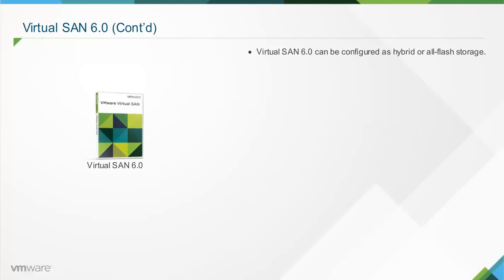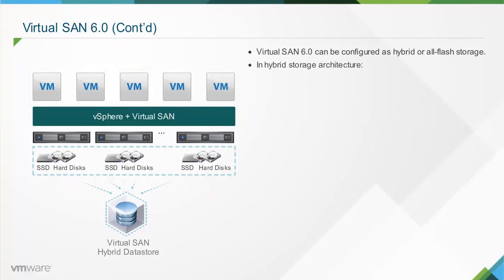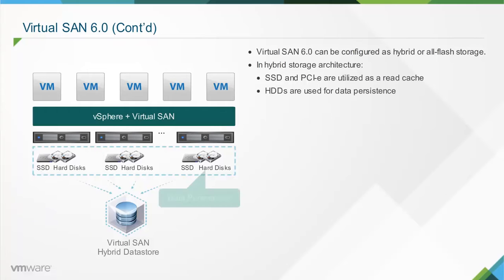Virtual SAN 6.0 can be configured as hybrid or all-flash storage. In hybrid storage architecture, Virtual SAN pools server-attached capacity devices such as magnetic devices, caching devices that are typically solid-state drives or SSDs, and PCIe devices to create a distributed shared data store. The data store abstracts the storage hardware and provides a software-defined storage tier for virtual machines. Flash-based devices such as SSD and PCIe are utilized as a read cache to accelerate performance, while capacity devices such as hard disk drives or HDDs are used for data persistence.